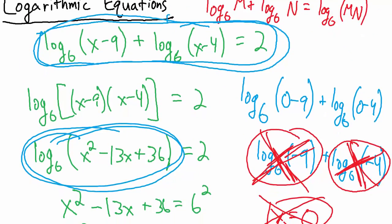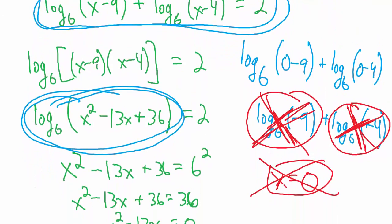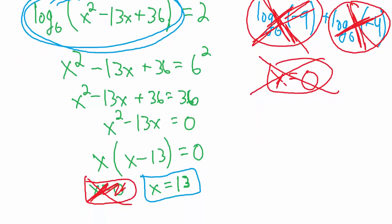So I guess just to be thorough let's go ahead and check 13 also. We are here to learn after all. So if we check 13 we're going to have the base 6 log of 13 minus 9 plus the base 6 log of 13 minus 4.